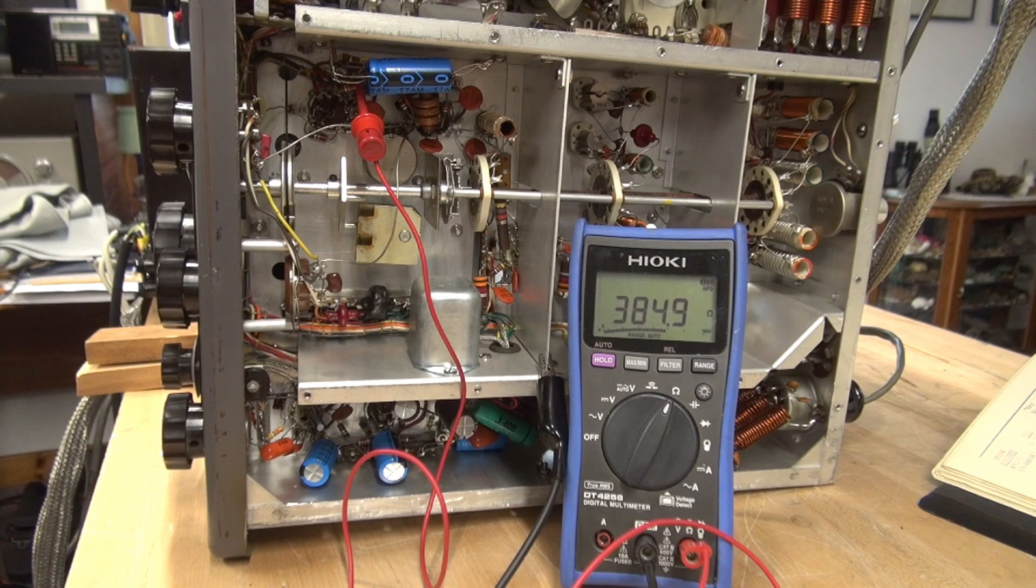Alright, I am measuring at the point of the negative 45 volt bias feed that's coming in to the 22K resistor, and that's R112. It goes to pin 7 of the 12AU7 tube. Monitoring at that point,